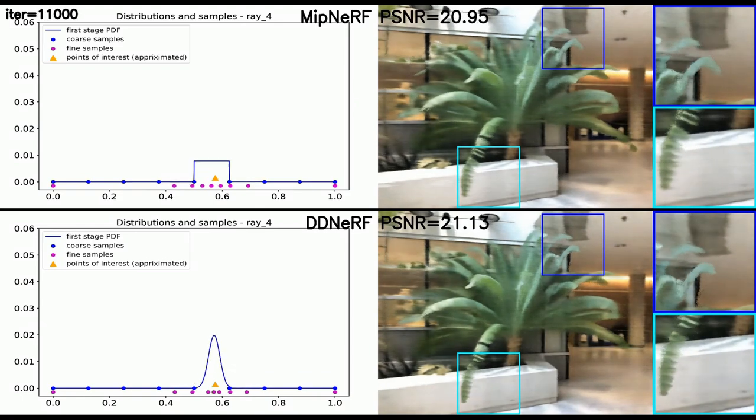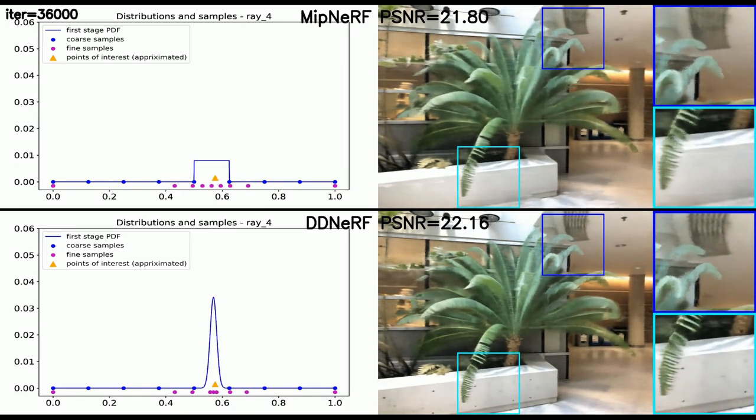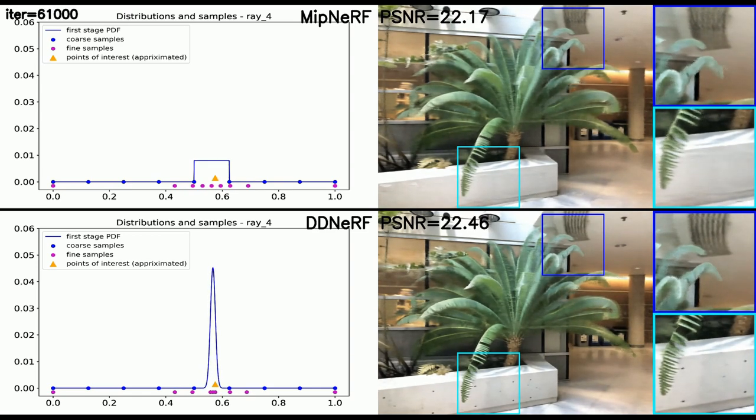This is a comparison of a training process with eight intervals between MipNeRF in the first row and DDNeRF in the second row. Notice how DDNeRF learns more accurate distribution that lead to more precise second stage samples and to better results. Also, note how DDNeRF distribution keeps refining through the entire training process while MipNeRF distribution remains relatively static from an early stage.